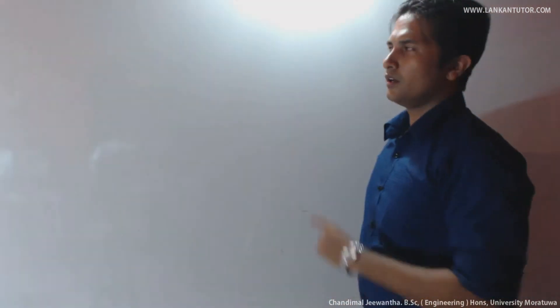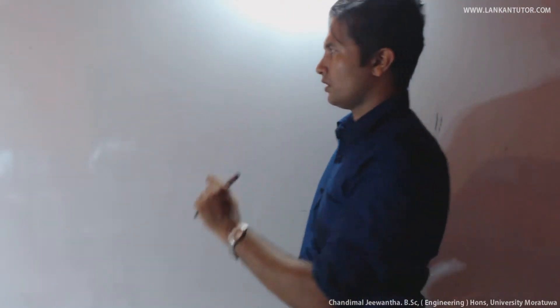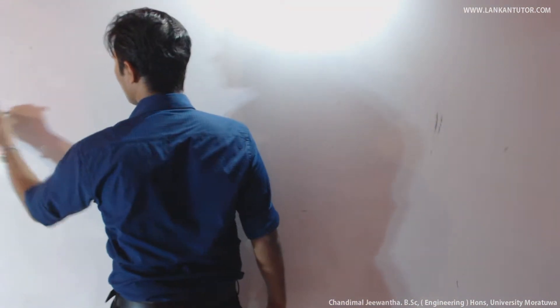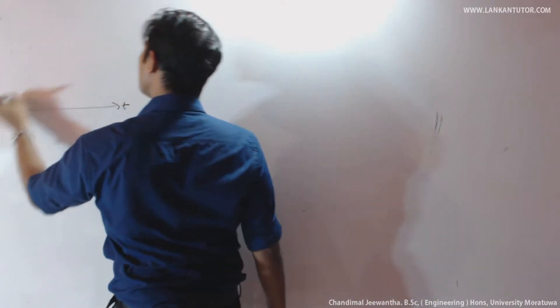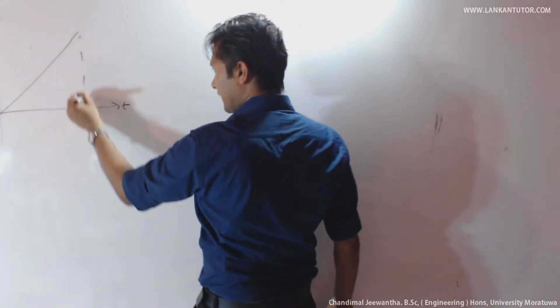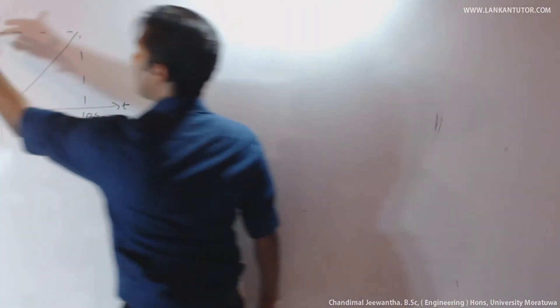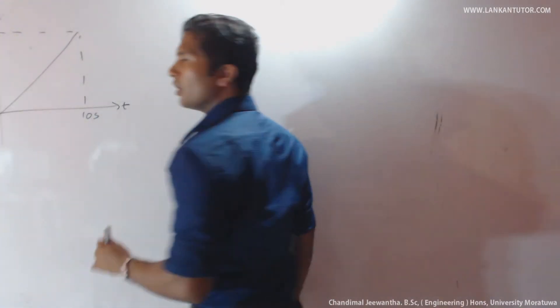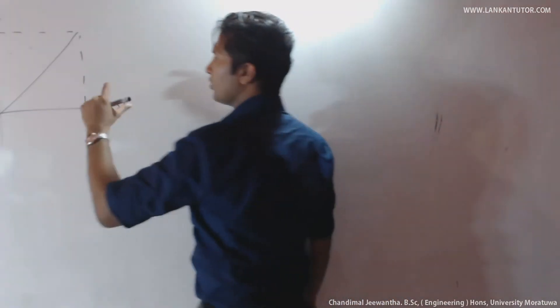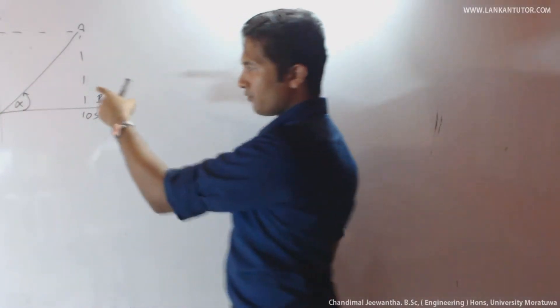That's all under displacement-time graphs. Now, we can go through a small example. An object moves at uniform velocity for 10 seconds and displacement is 20 meters. To find uniform velocity, take the tan value of alpha. Uniform velocity equals tan(α), which is 20 divided by 10 — that is 2 meters per second.